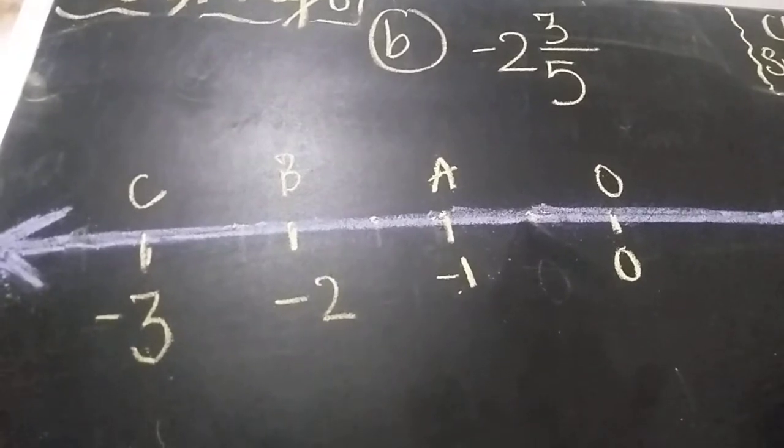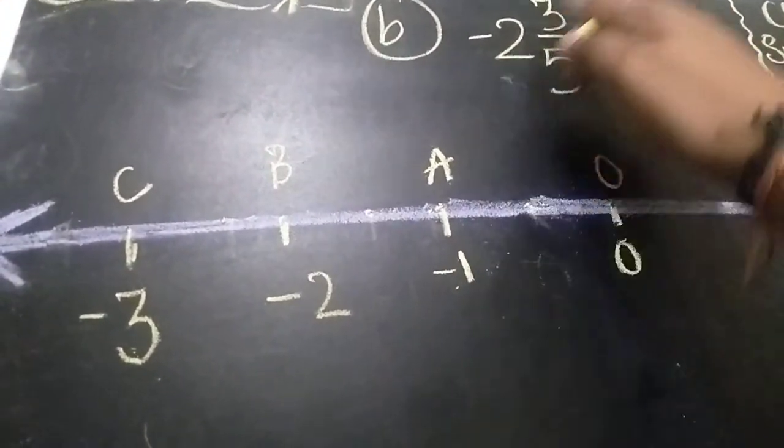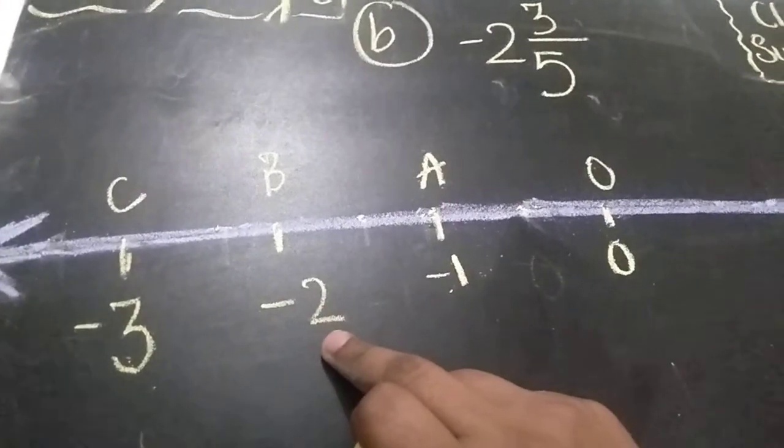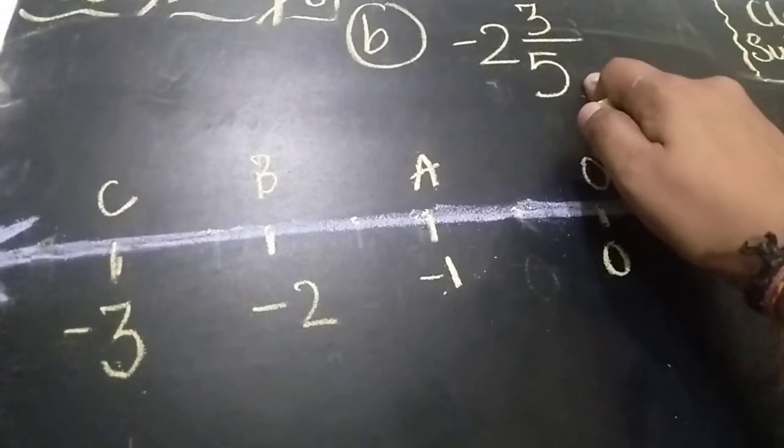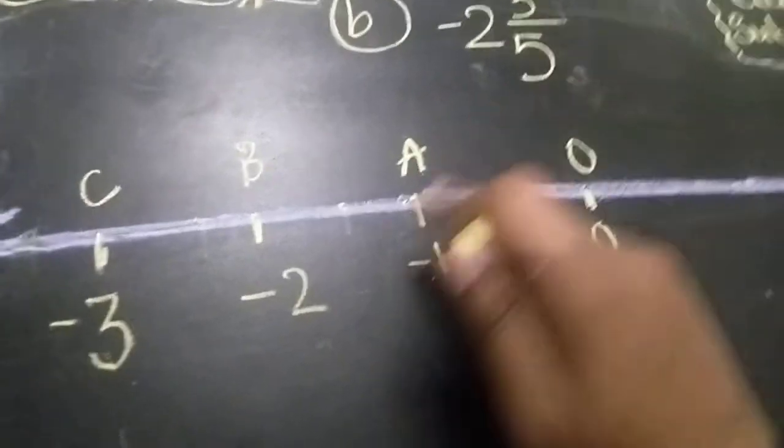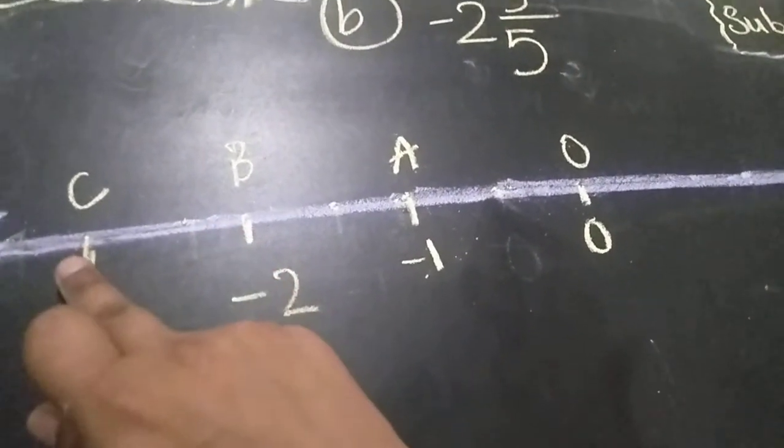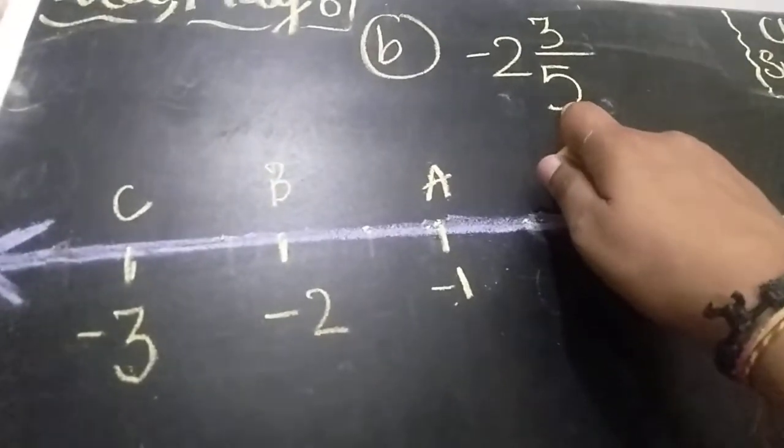So which rational number you have to represent? Minus 2, 3 by 5. So minus 2 is already written here. After that the fraction is 3 by 5. That means similarly you have to divide B, C in how many parts? 5 equal parts.